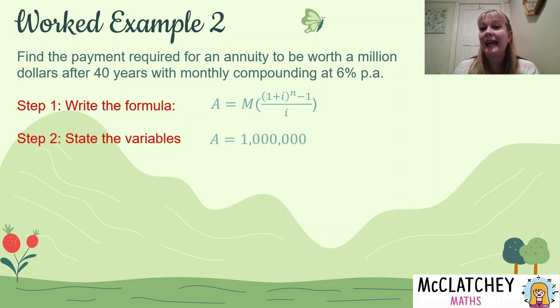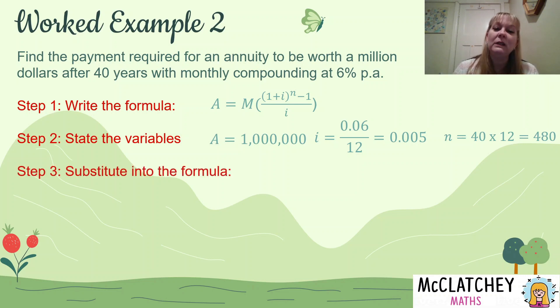This time we are trying to find M, we've got A, it's a million dollars. That's what we're trying to work towards. We haven't got M, but we've got the other variables. So we're going to once again convert that interest rate from 6% per annum to a monthly rate this time. And that's 0.005. And we're going to multiply 40 years by 12 months per year, which gives us 480 for our value for N.